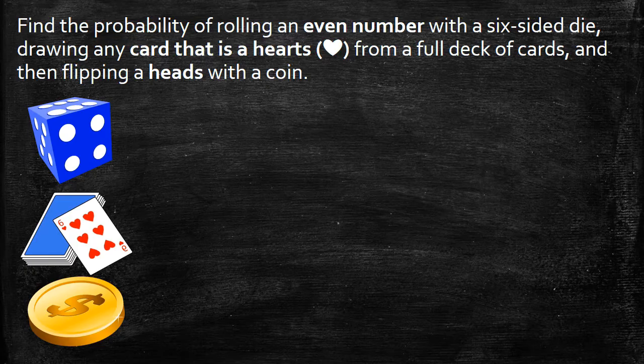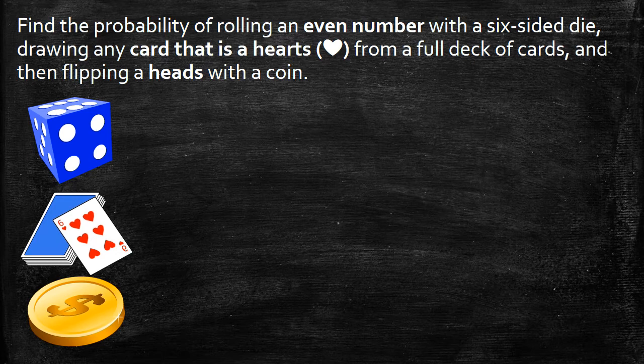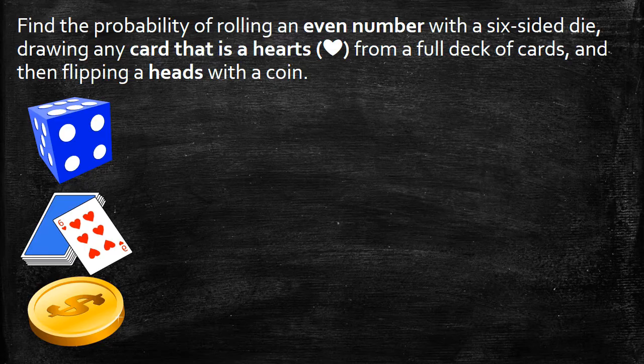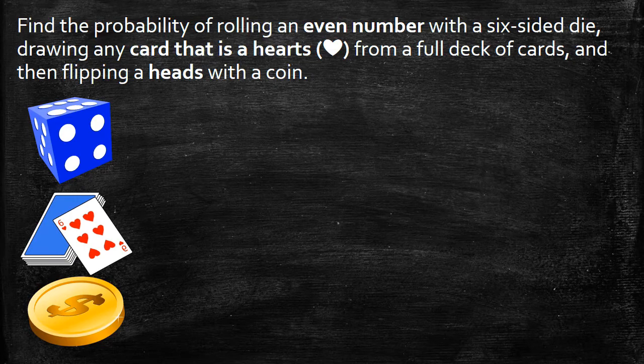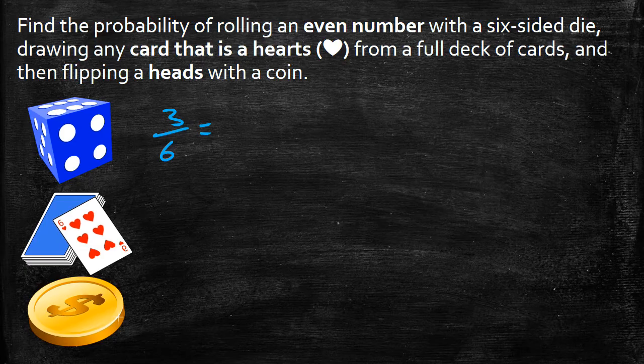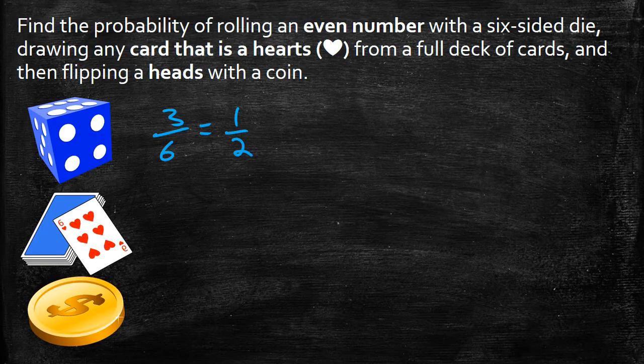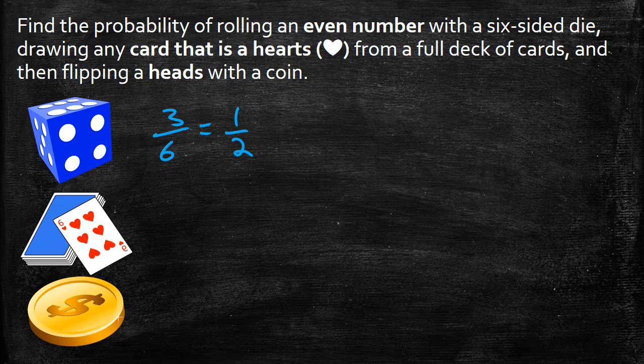So I'm going to start by finding the probability of each individually. So I know I can roll an even number, so that's a 2, a 4, or a 6. That's three out of the possible six outcomes when we roll a dice. And I'm going to simplify that. I'm going to put that down into lowest terms, which would just be 1 over 2.